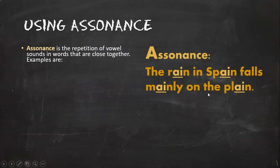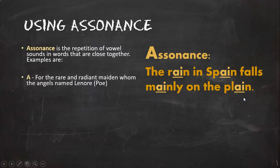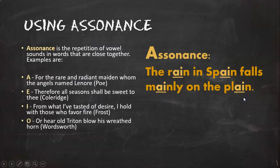Another thing is assonance. Assonance is the repetition of vowel sounds in words that are close together. Here's some examples: 'The rain in Spain falls mainly on the plain.' Here's one with A. 'For the rare and radiant maiden whom the angels named Lenore,' that's from Edgar Allan Poe. Here's an example with E: 'Therefore all seasons shall be sweet to thee.' Here's an example with I: 'From what I've tasted of desire, I hold with those who favor fire.' Here I, here I, there I, I. Here's an example with O: 'Hear old Triton blow his wreathed horn.' And here's U: 'Uncertain rustling of each purple curtain,' Poe again. Hear that U sound?